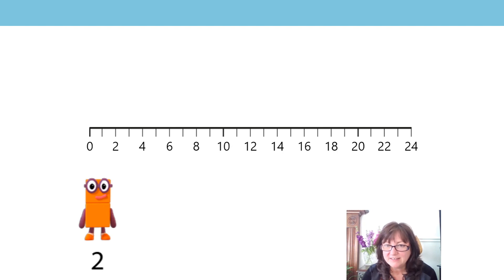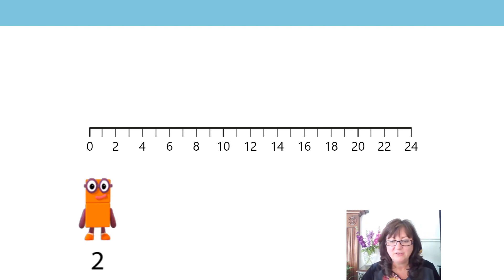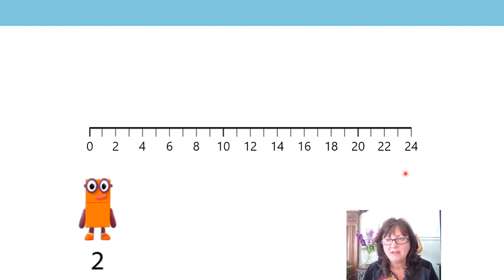What did you notice? Did you spot it? Did you see? We counted further than twenty. Let me get my mouse here to show you. We got to twenty here and then we counted another group of two and another group of two. We started at twenty and counted twenty, twenty-two, twenty-four. Great job.